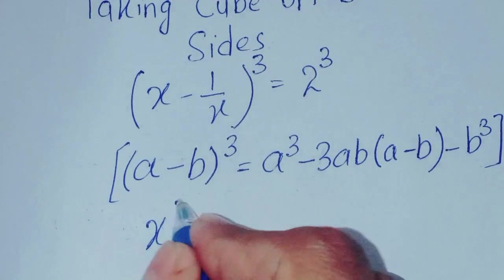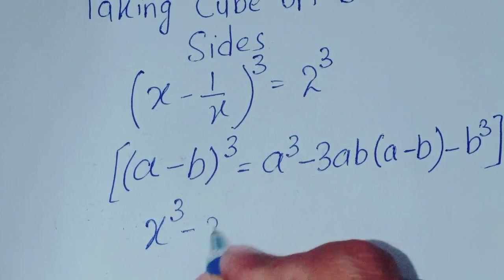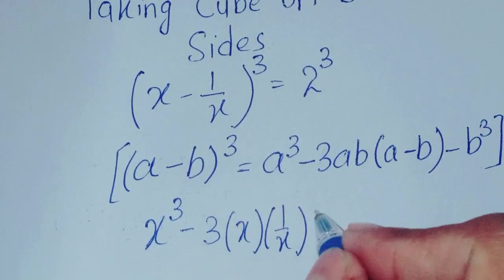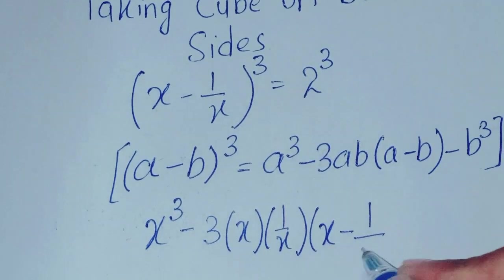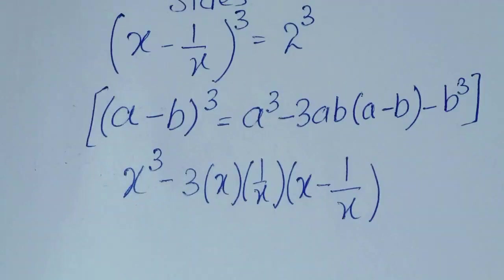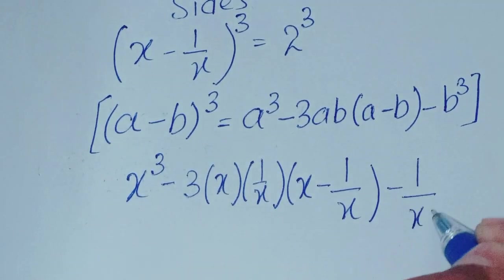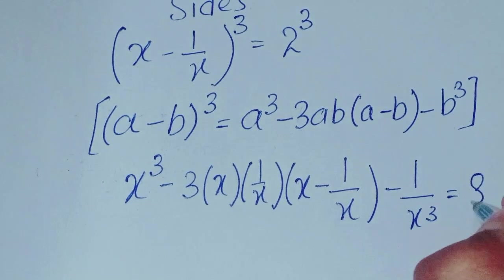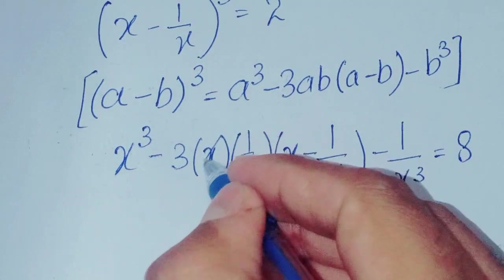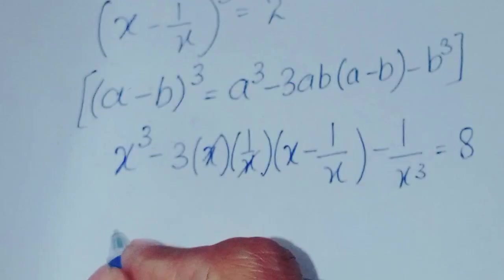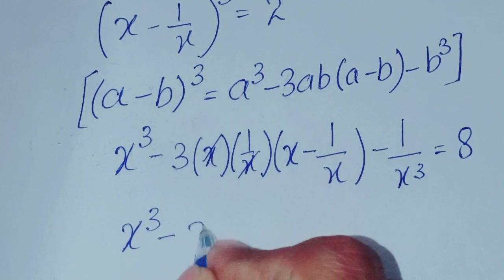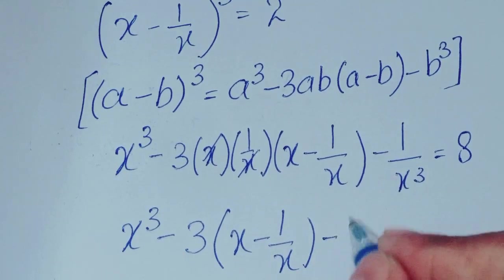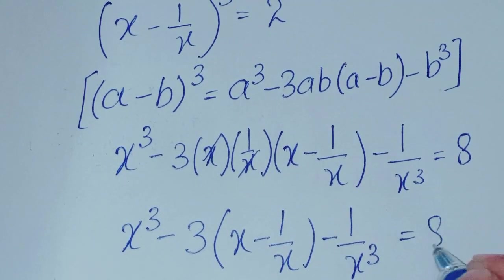Now we apply this formula here, where a is x and b is 1 over x. So we get: x cubed minus 3 times x times (1 over x) times (x minus 1 over x) minus 1 over x cubed, is equal to 2 cubed, which is 8. The x terms cancel, leaving x cubed minus 3 times (x minus 1 over x) minus 1 over x cubed equals 8.